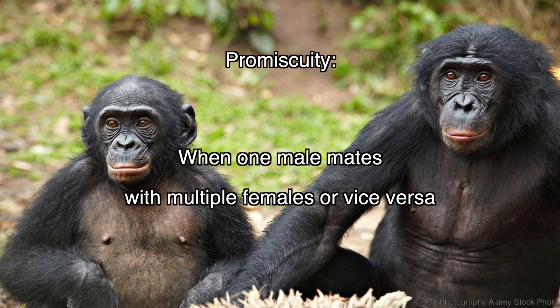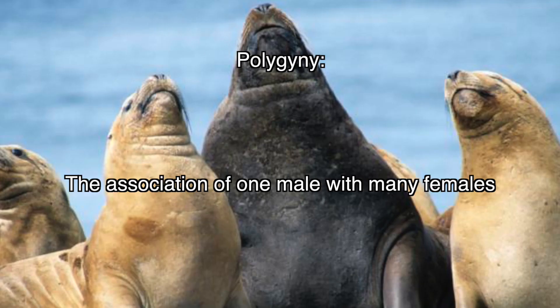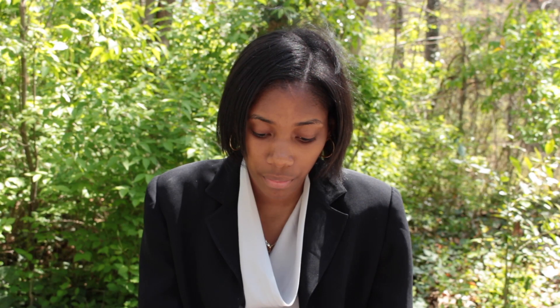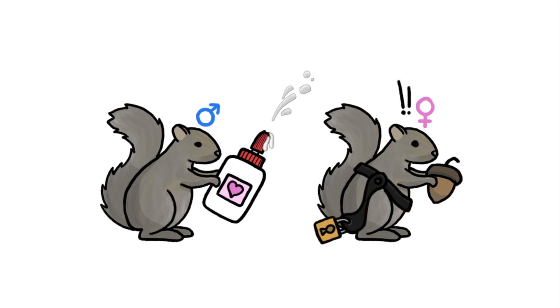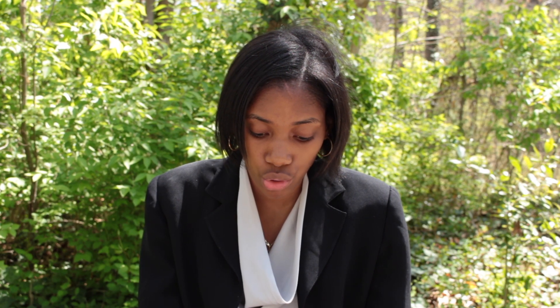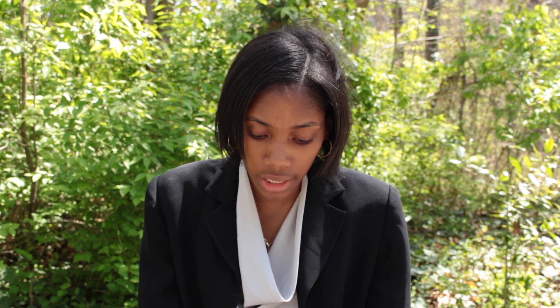Promiscuity is when one male mates with multiple females and vice versa. Polygyny is the association of one male with many females. This is most common in mammals, but also found in a few birds, insects, and other animals. It focuses on male-male competition because the females are only paired with one male. This video is a representation of a copulatory plug — a secretion or object left by the male in the female's reproductive tract to prevent further matings by the female.